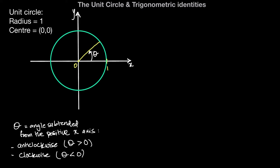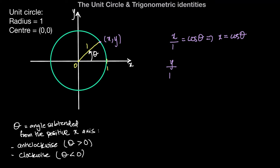Once we subtend the radius by an angle of theta, we want to express the x and y coordinates in terms of theta. For the unit circle, the ratio between the x coordinate and the radius can be expressed as cosine of theta, and since the radius is 1, the x coordinate equals cosine of theta. Similarly, the y coordinate equals sine of theta.